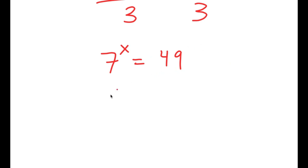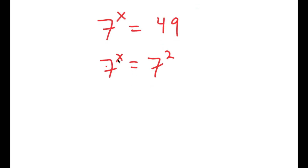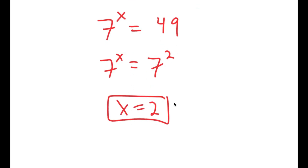And 49 is equal to 7 squared. So I have 7 to the power of x is equal to 7 to the power of 2, meaning x is equal to 2.